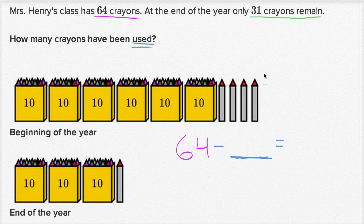So 64 minus the number that are used is going to be equal to the number that remain. So this is going to be equal to what's left over. And they tell us that 31 crayons remain. 31 crayons remain. So we need to figure out what's here. What is this blank? 64 minus blank is 31. Well, if 64 minus blank is 31, then I can swap the 31 and the blank. That means that 64 minus 31 is going to be equal to blank.